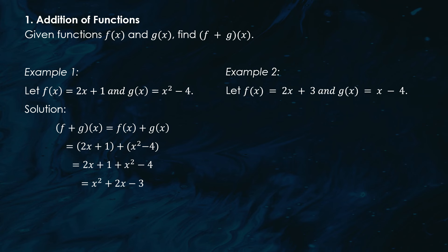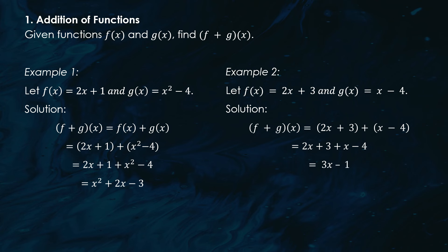Let's do another addition example. If f(x) = 2x + 3 and g(x) = x − 4, we add them just like before: (f + g)(x) = 2x + 3 + x − 4. This process works for any two functions as long as they have the same domain.